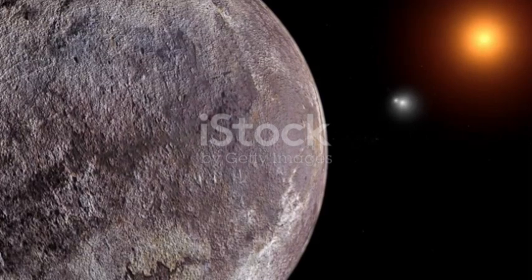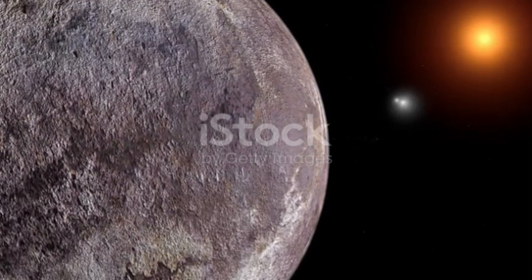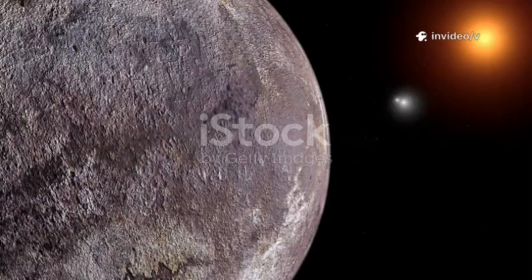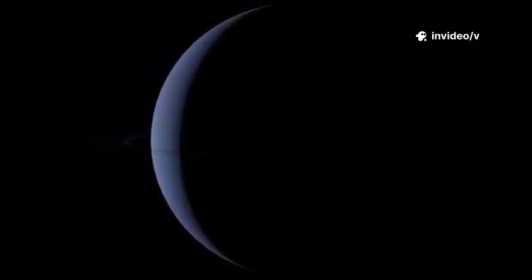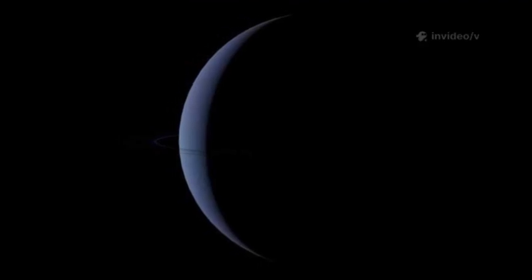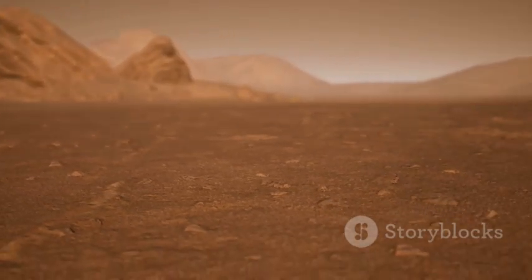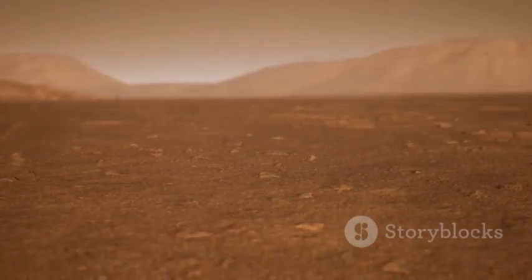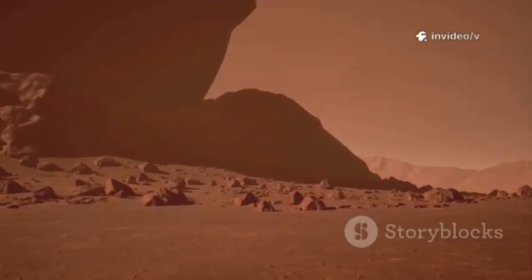Proxima b, by contrast, orbits a volatile red dwarf, enduring relentless radiation. Even with a magnetic field, the planet's atmosphere would struggle to survive. No atmosphere means no protection, no liquid water, and no climate stability. The surface is likely hostile and lifeless.